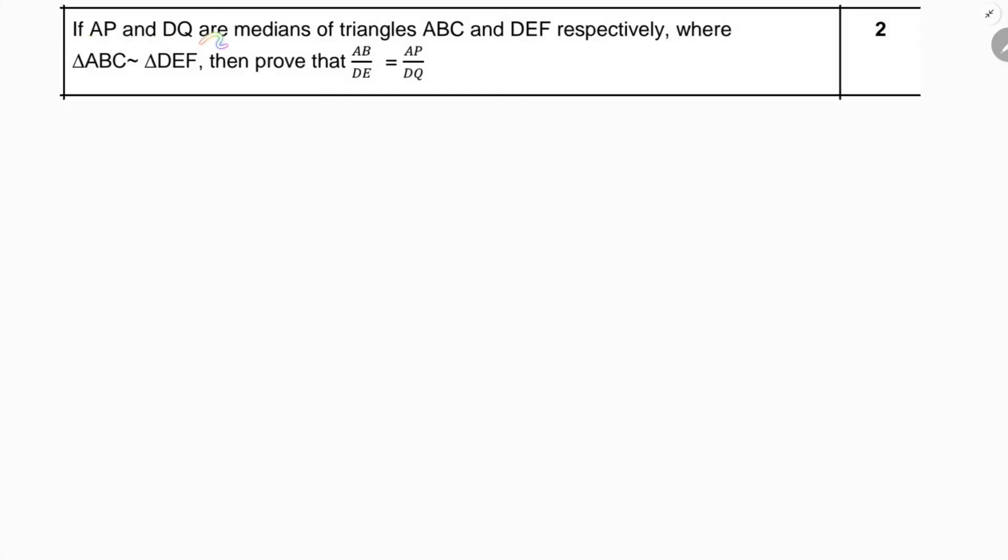If AP and DQ are medians of triangle ABC and DEF respectively, where triangle ABC is similar to triangle DEF, then prove that AB by DE equals AP by DQ.